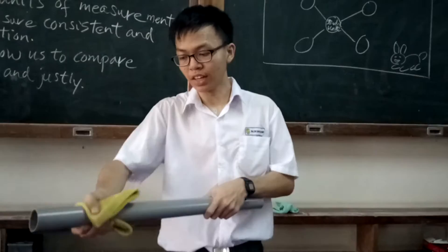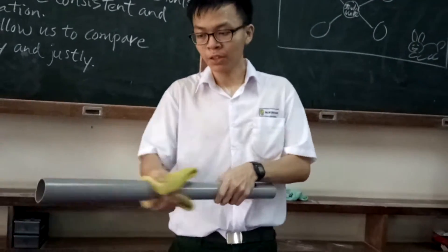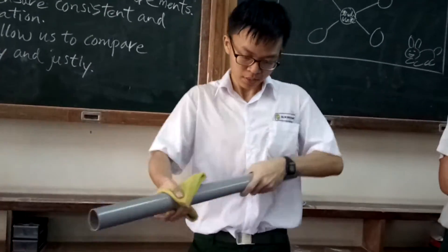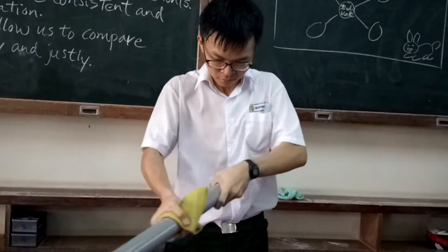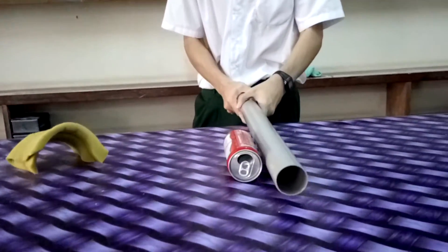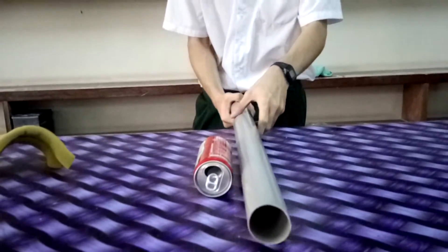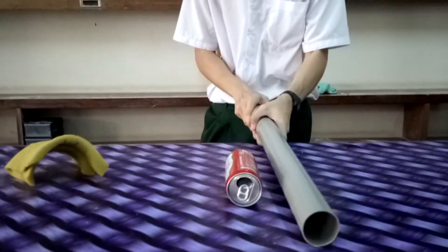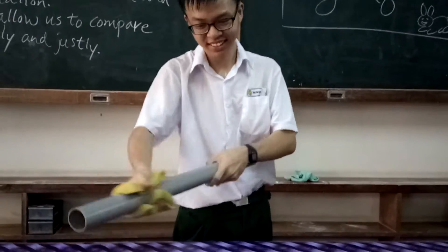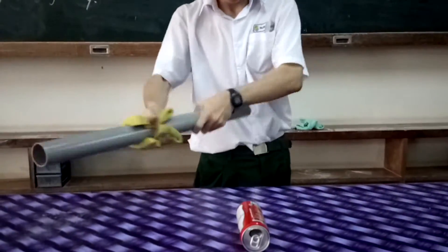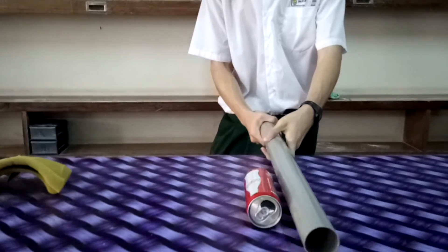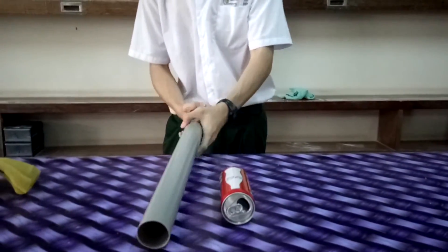Now I am rubbing the sponge against the PVC pipe. After rubbing, the electrons of the sponge will transfer to the PVC pipe. Now I will put this near the coke can. Let's rub again. The PVC pipe will attract it because it has different charges.